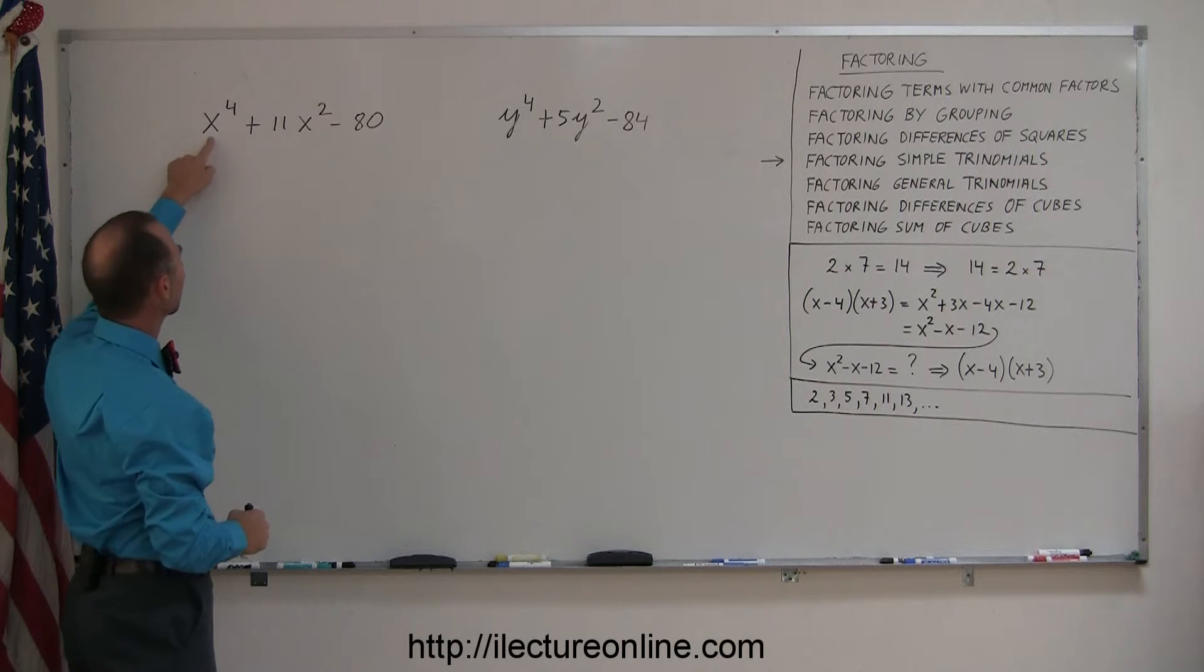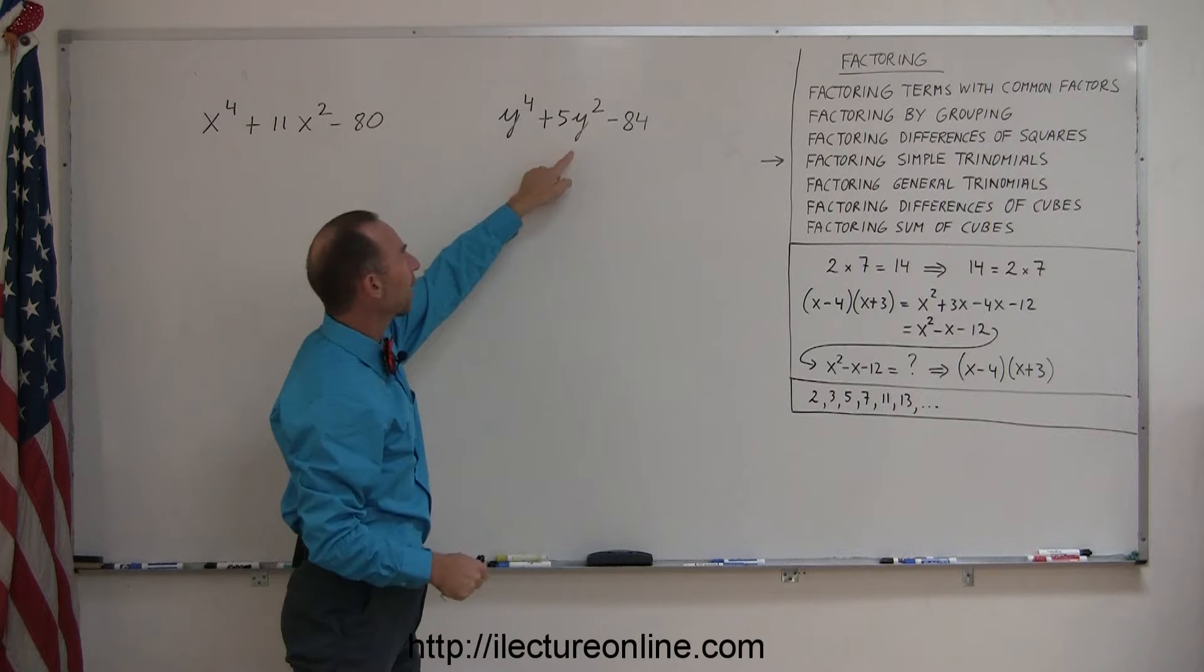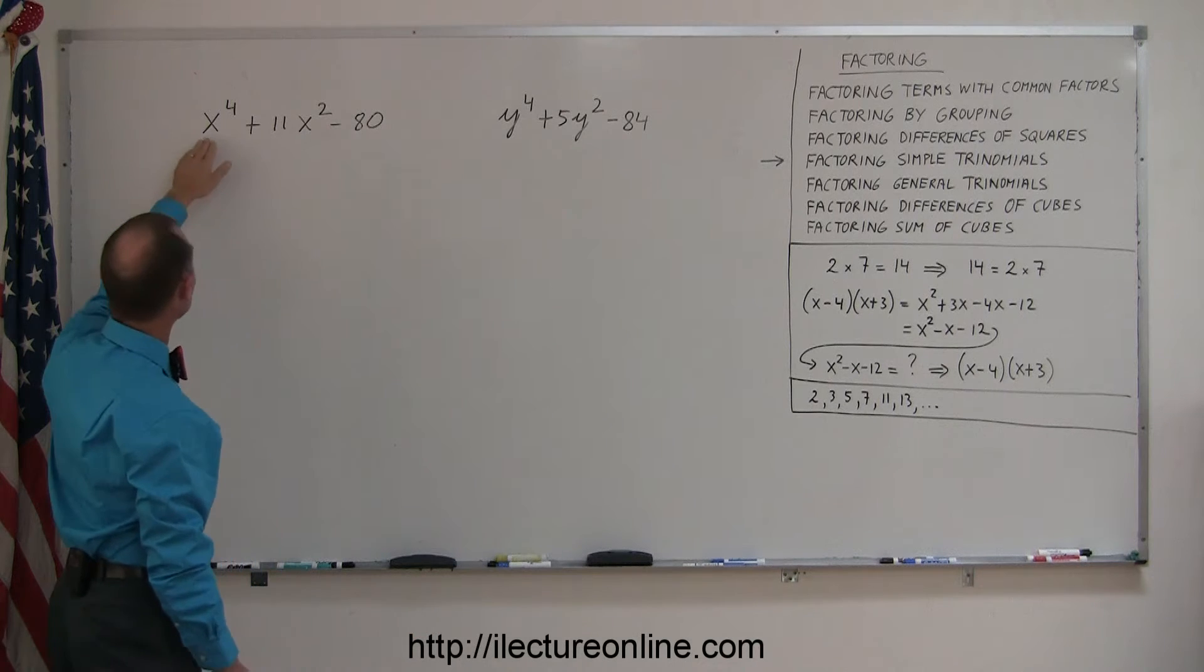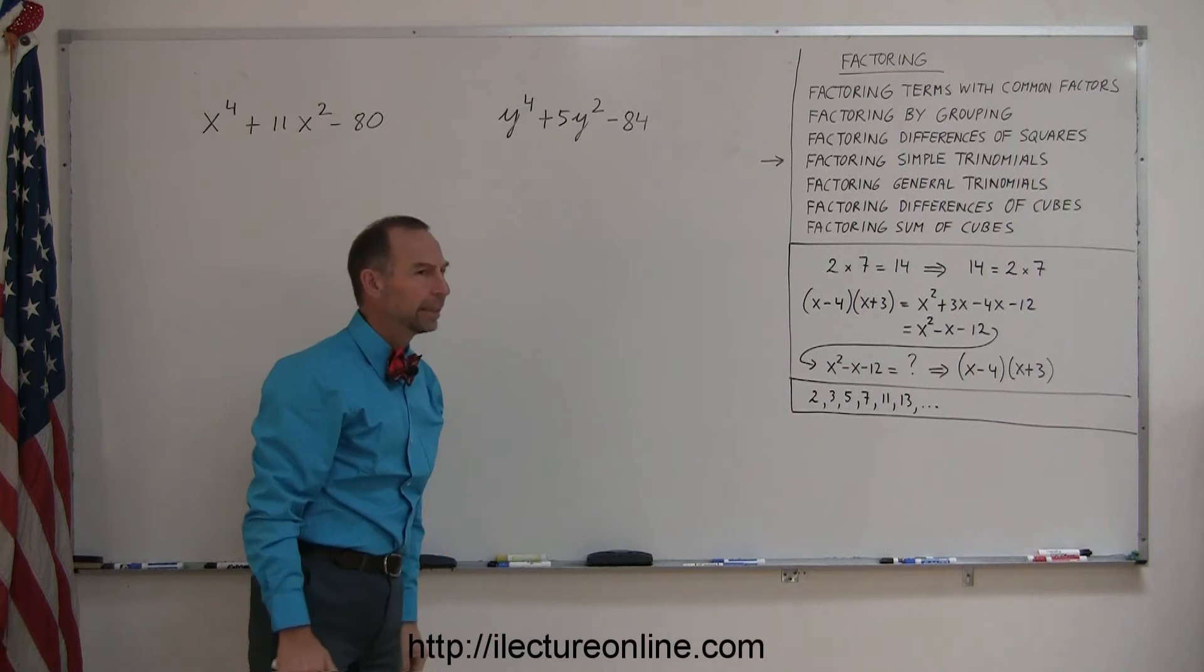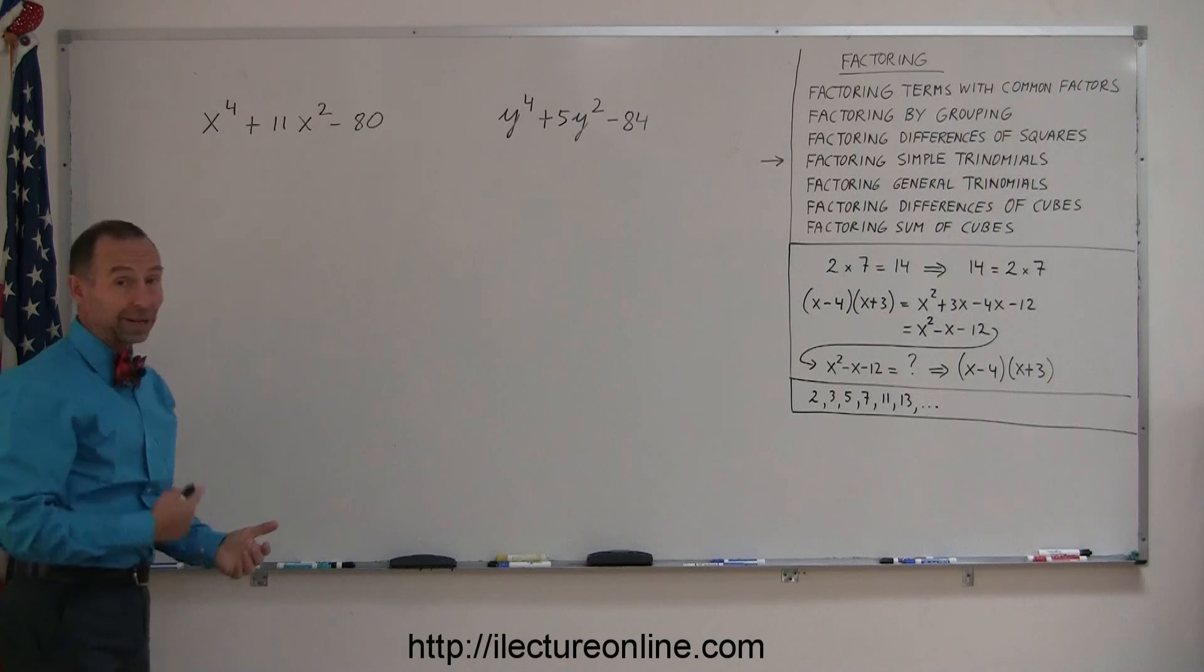Normally you have an x squared there and an x, or a y squared and a y, but now we see an x to the fourth and an x squared, y to the fourth and y squared. At first you say, well I don't know how to do those.